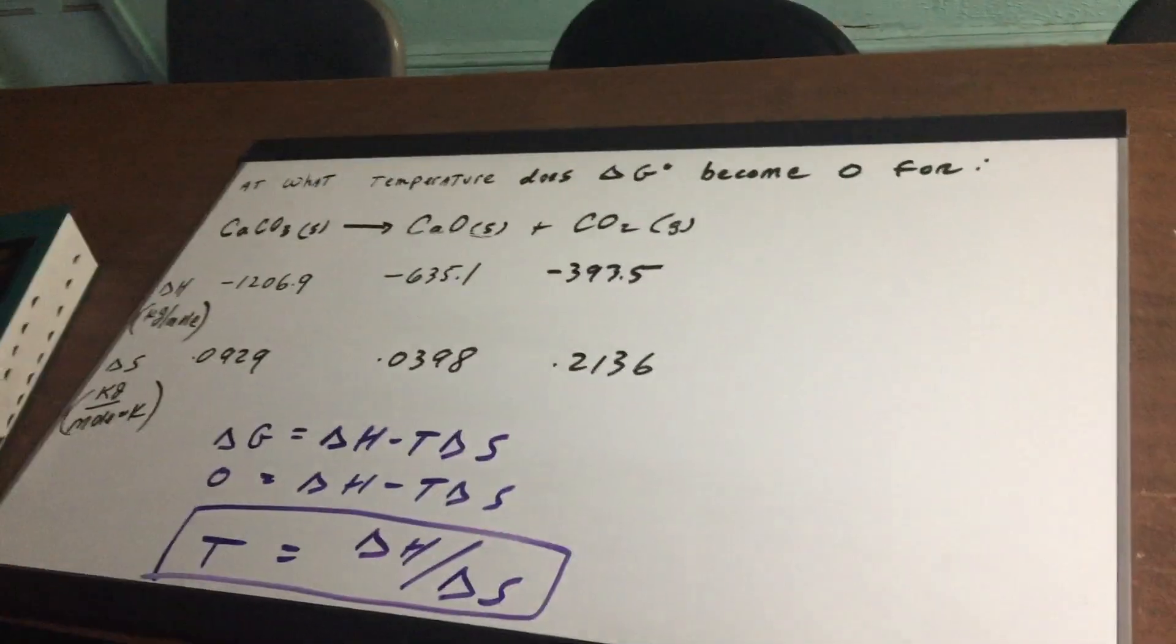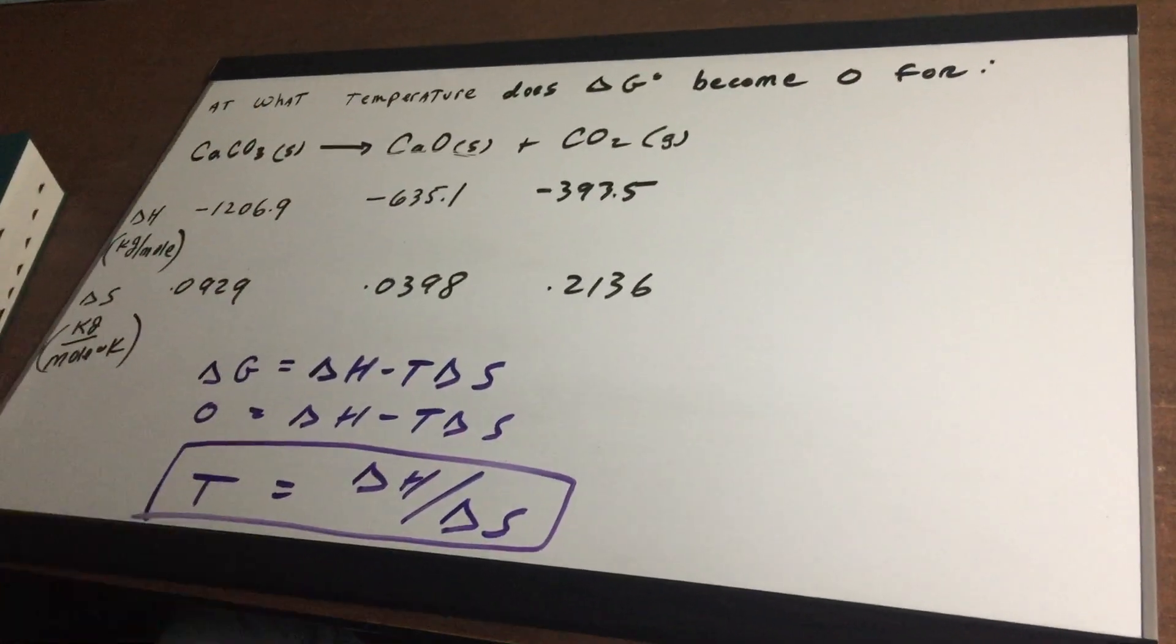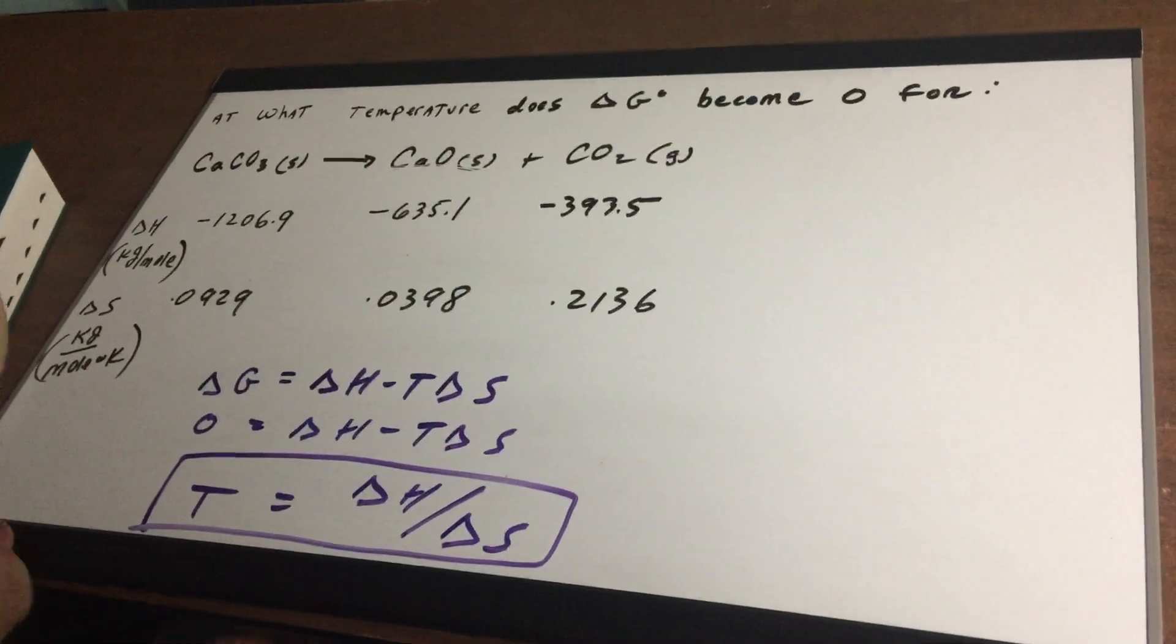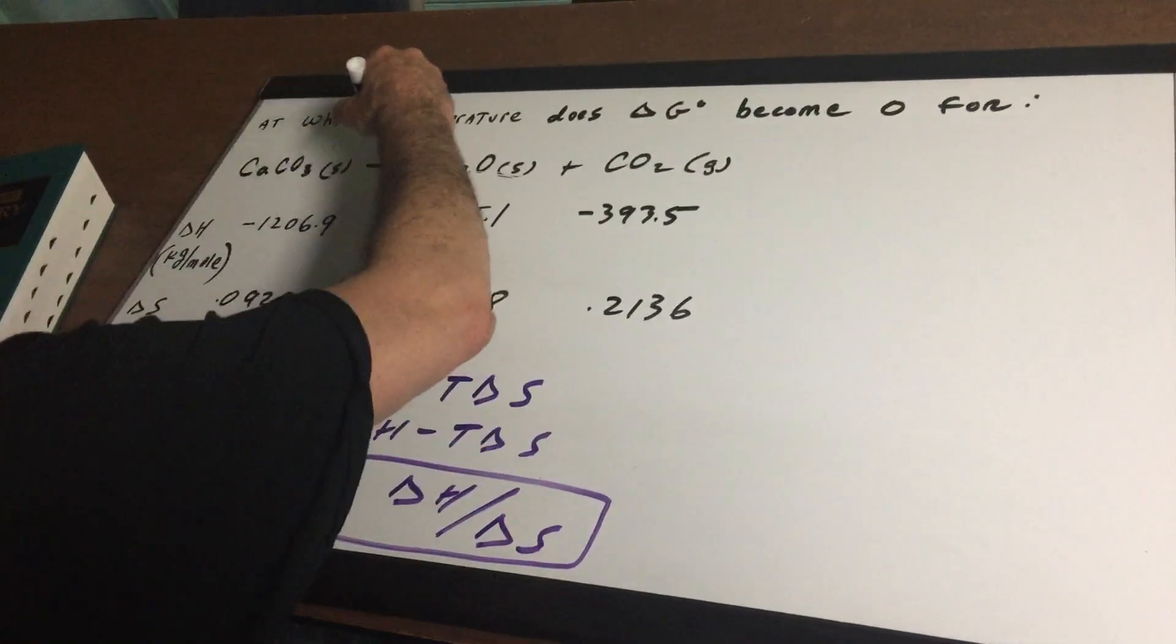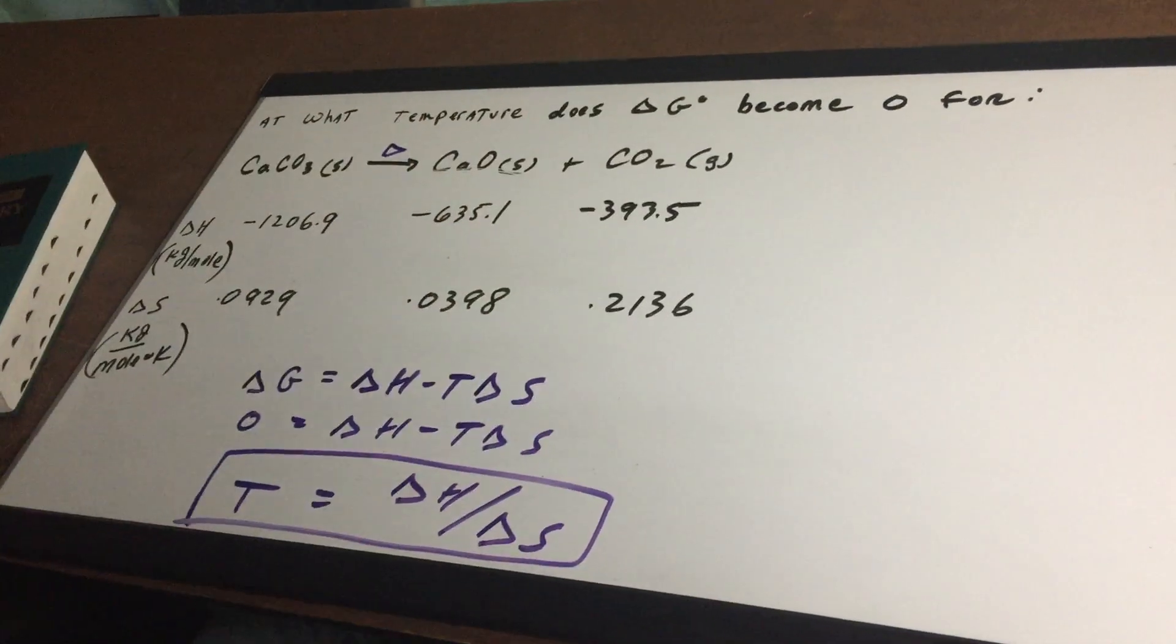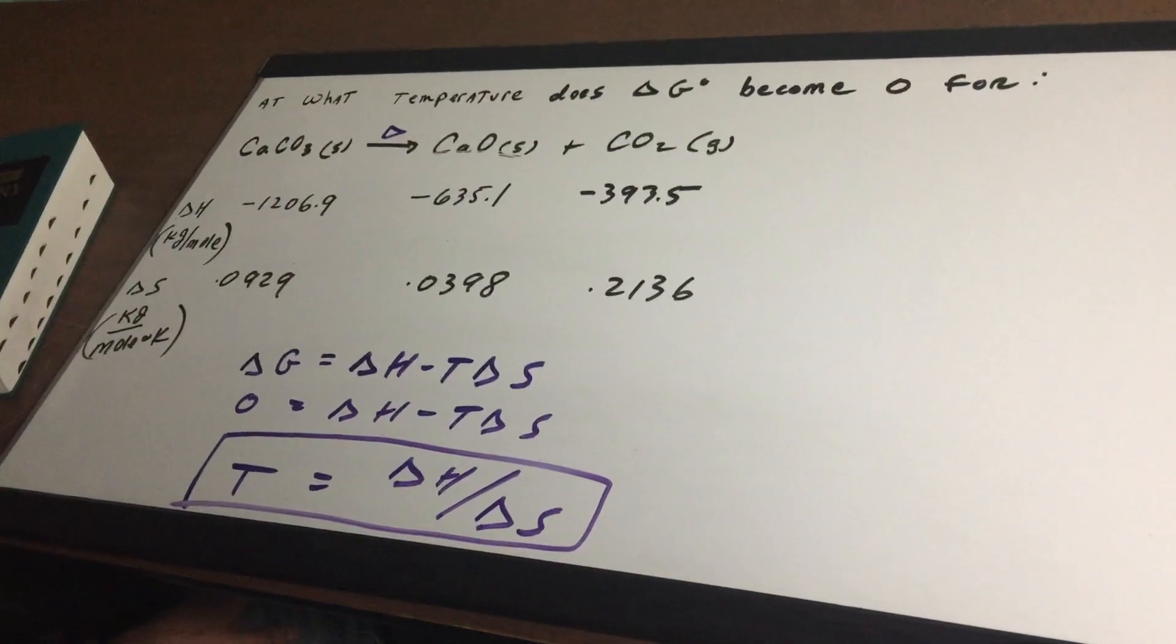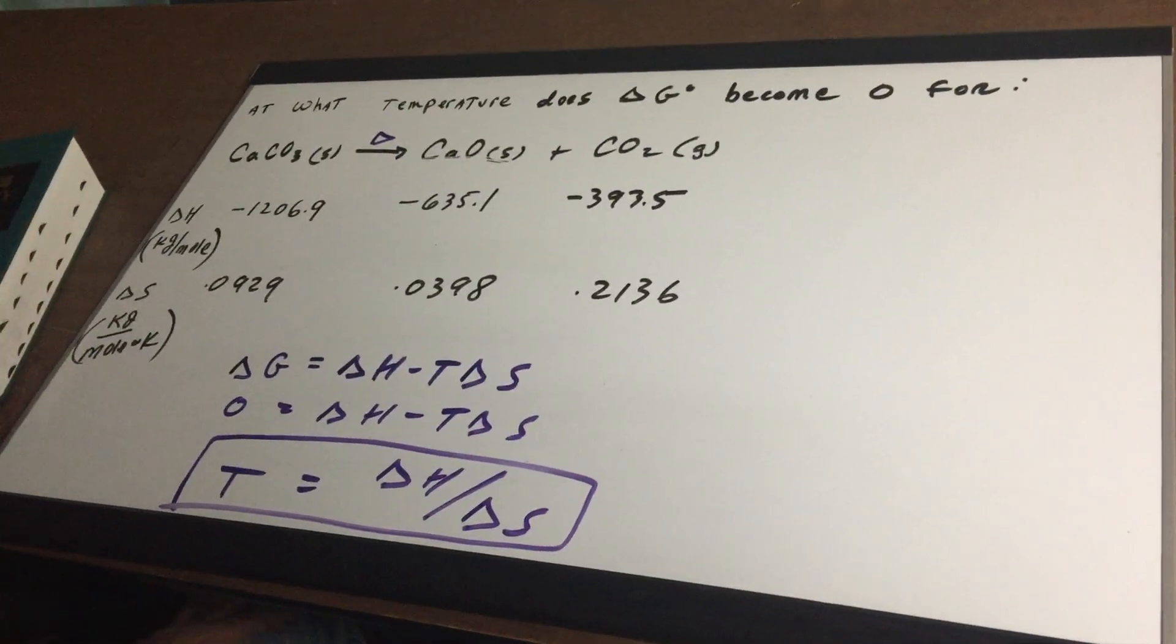So come around and let's have a look at what I have for you. I want to know at what temperature does the Delta G become zero for this reaction. Now, if you remember when Delta G is zero, it means we're in equilibrium. We're going to take a look at calcium carbonate.